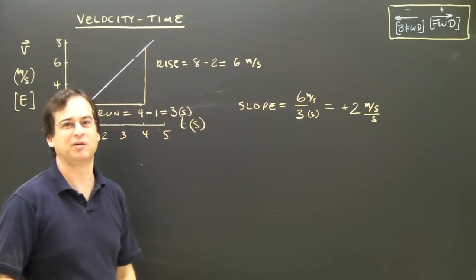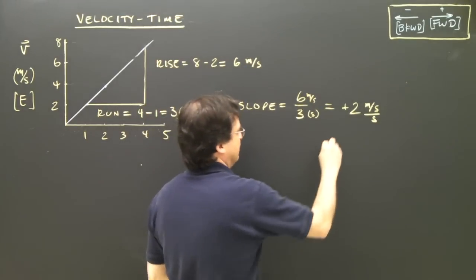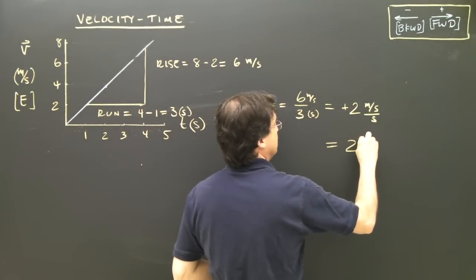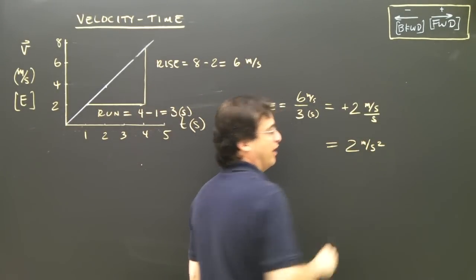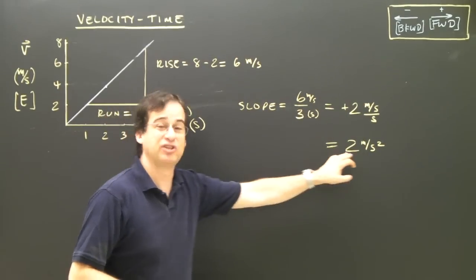Well, what does meters per second per second mean? Well, we write that as 2 meters per second squared, that's the units. Those are the units of acceleration.